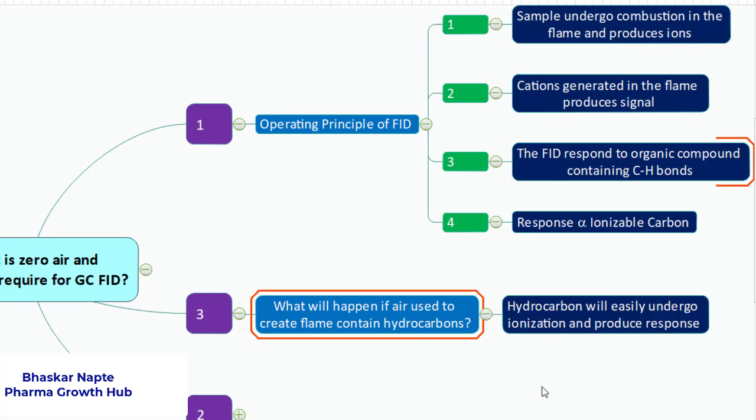What is going to happen? The air itself can give a response because of the presence of hydrocarbons, and the interference, the background noise, will come from the detector itself because of the hydrocarbons present in the air.